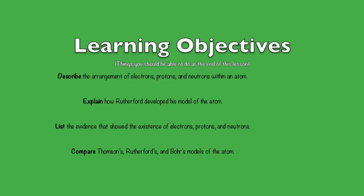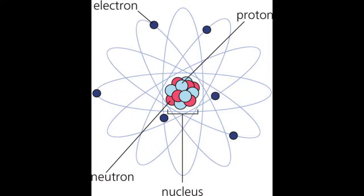protons, and neutrons within an atom. You should be able to explain how Rutherford developed his atomic model. You should be able to list the evidence that showed the existence of electrons, protons, and neutrons. And you should be able to compare Thomson's, Rutherford's, and Bohr's models of the atom.